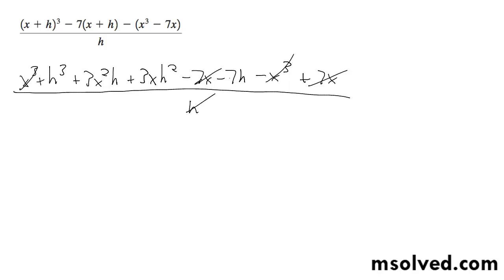and the h goes ahead and cancels that, that becomes a 1, that cancels out, this becomes a 2, and we're left with h squared plus 3x squared plus 3x h minus 7.